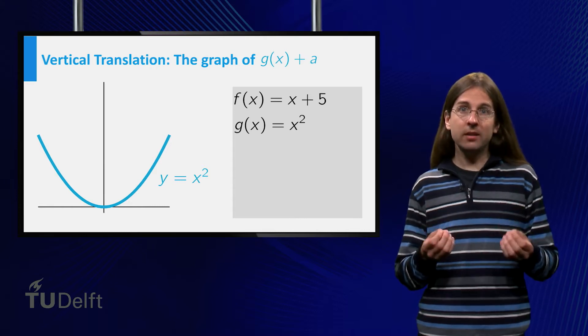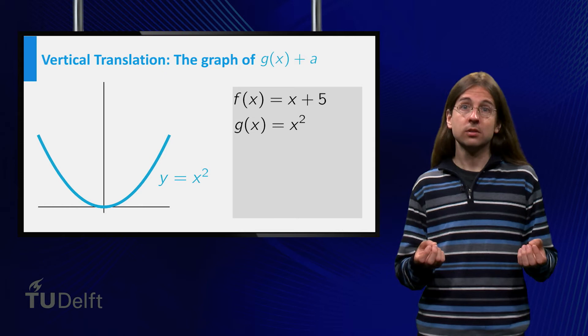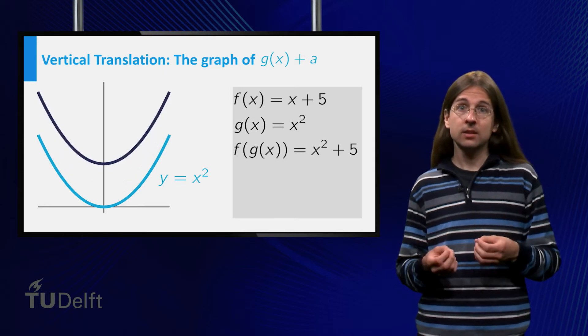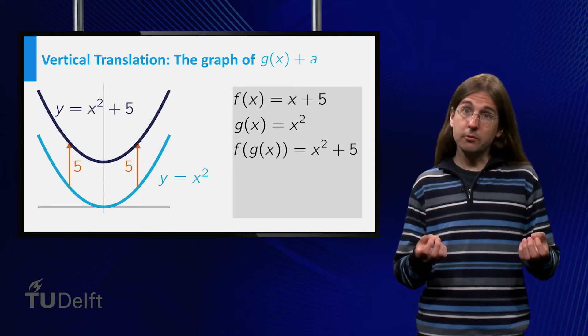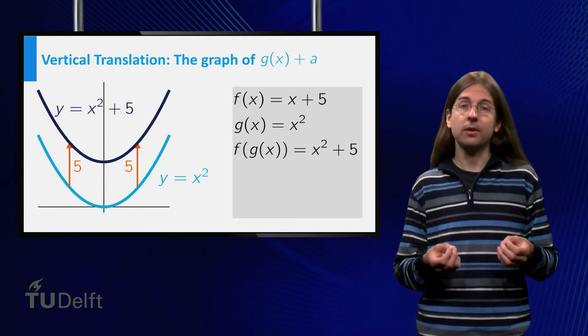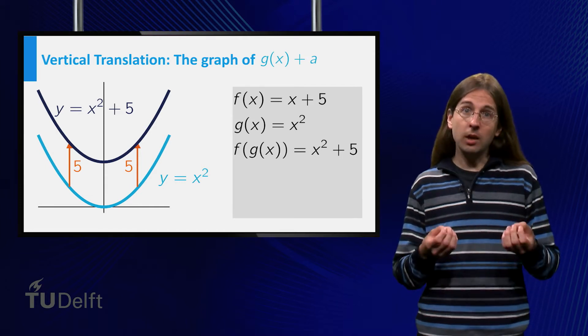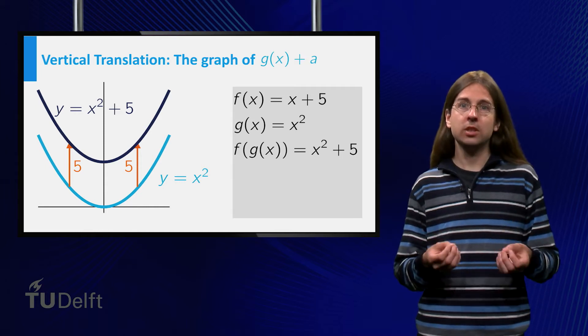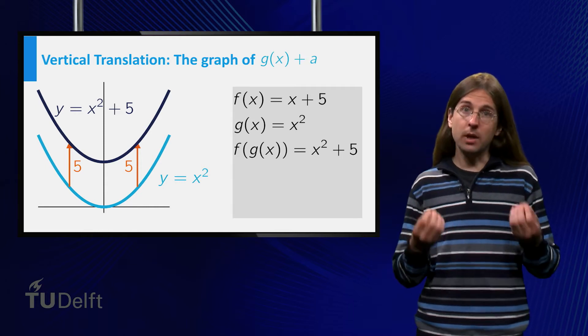Remember that it mattered in which order we composed. If we look at f of g, we obtain the function equals x squared plus 5. The graph of this function is equal to the graph of g shifted upwards by 5.